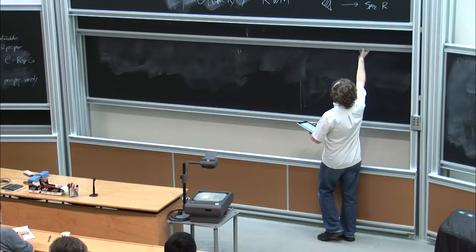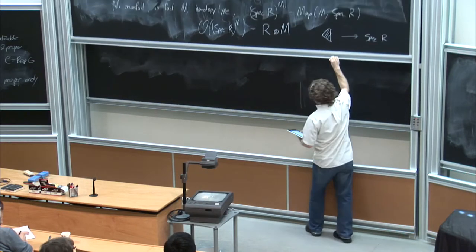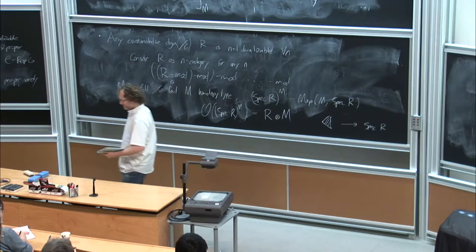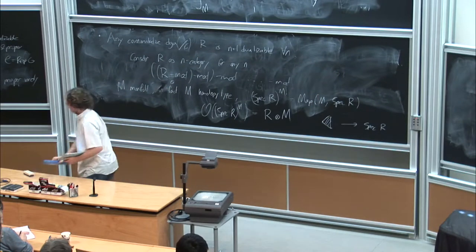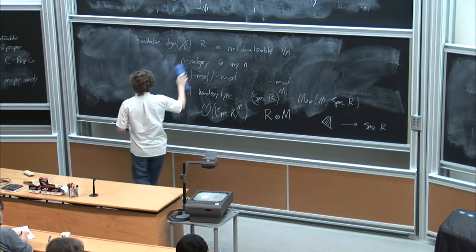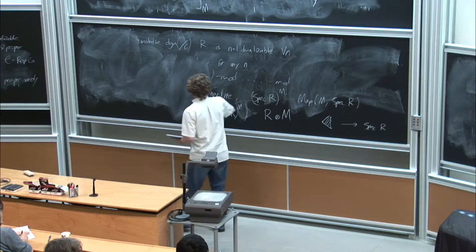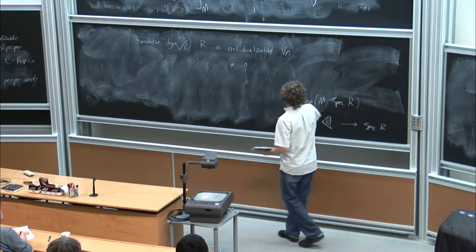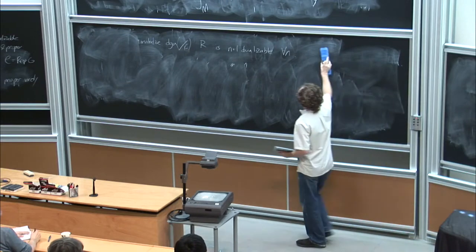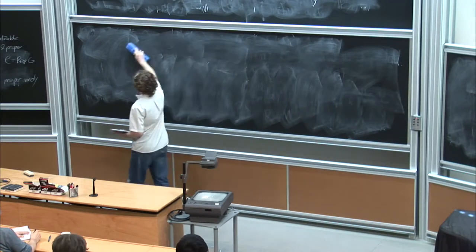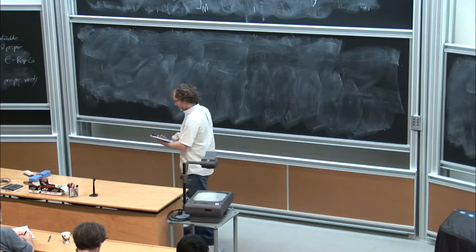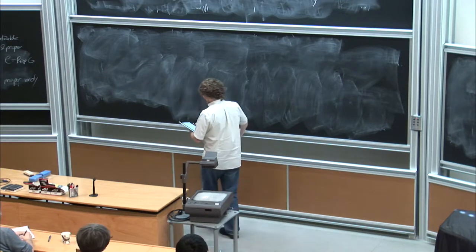This gives us a class of topological field theories, which is a kind of generalization of the B model. Derived algebraic geometry produces a bunch of field theories this way. They never produce numbers, but they produce a lot of other interesting structures, including structures about Hochschild homology.